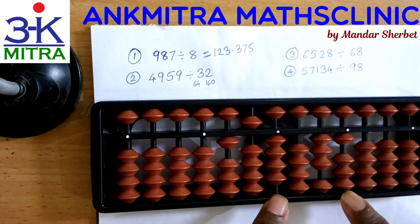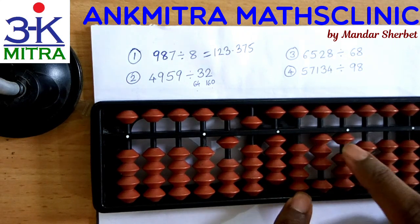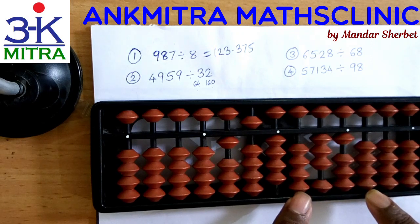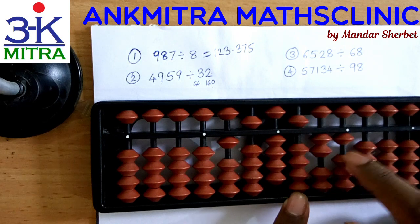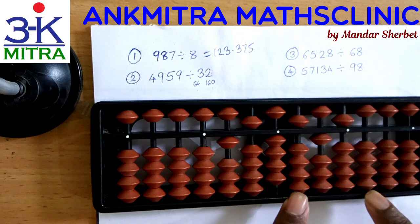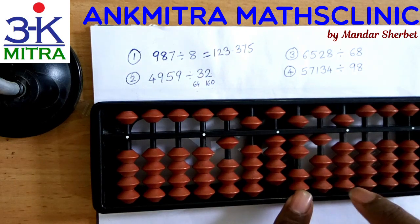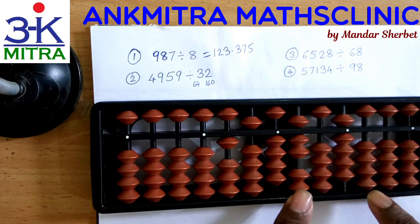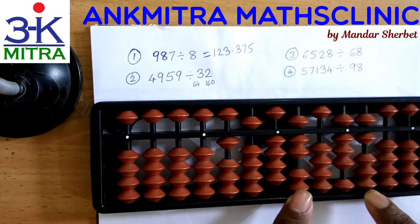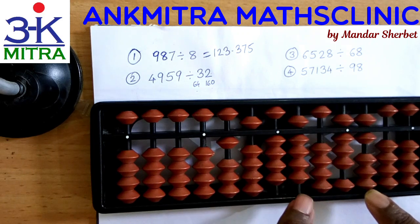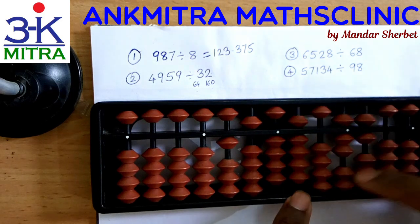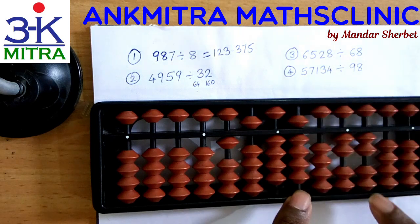Moving one rod further, we have the number 310. 5 times 32 can be subtracted from this, so I'll take 5 on the answer set and subtract 160. For subtracting 6 I'll do plus 4 minus 10. We still have 150 remaining. From 150 I can subtract 2 times 32 which is 64, so I'll take 2 on the answer set. We still have 86 remaining — we can subtract another 64 — so I'll take another 2 and subtract 64 from 86, leaving 22.